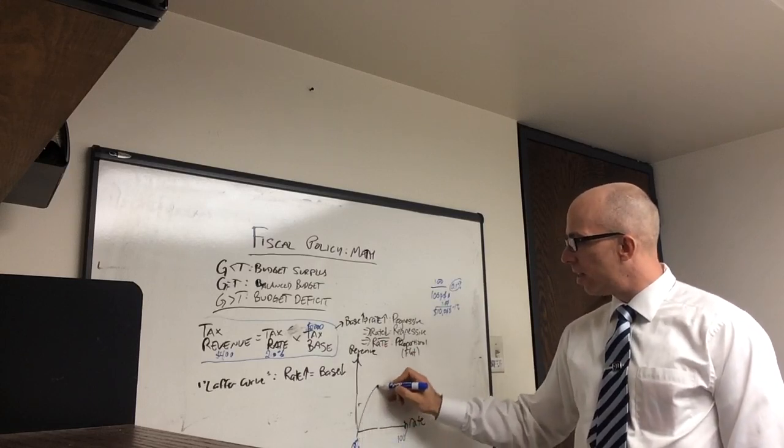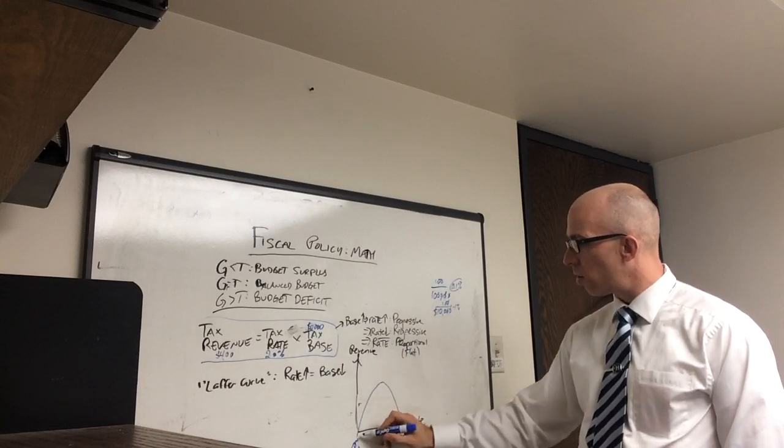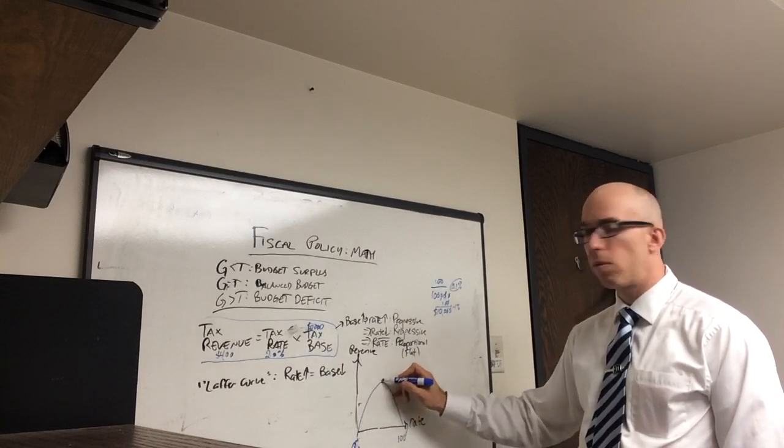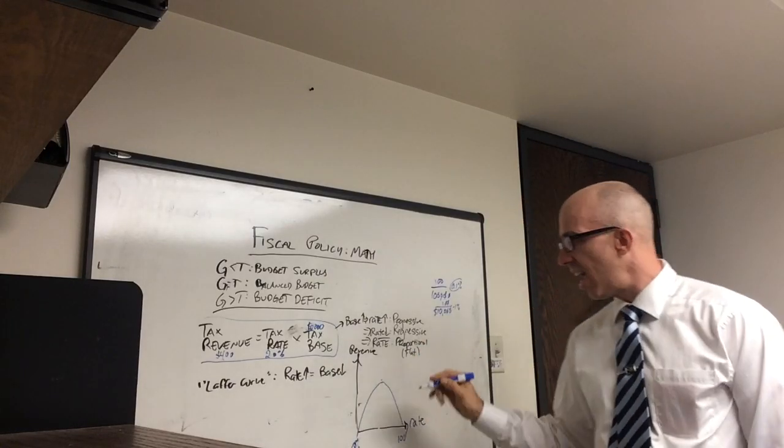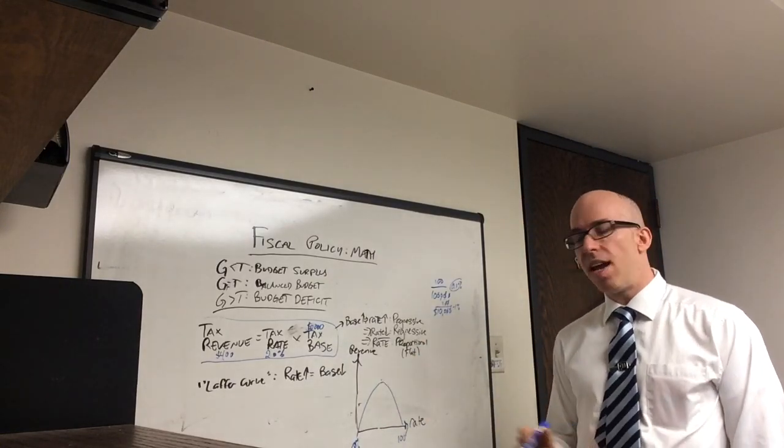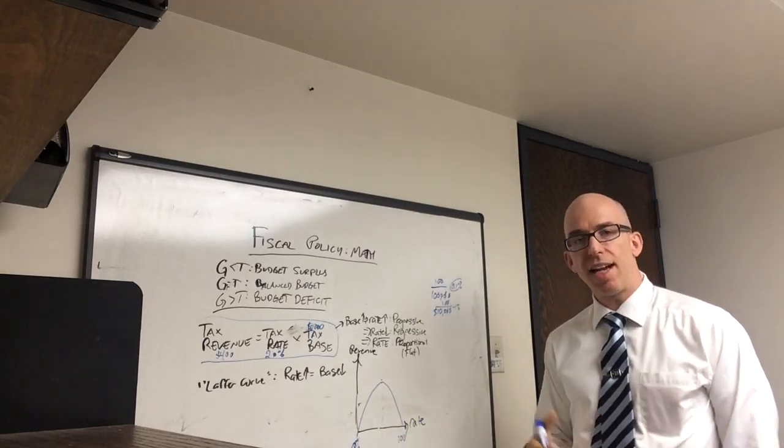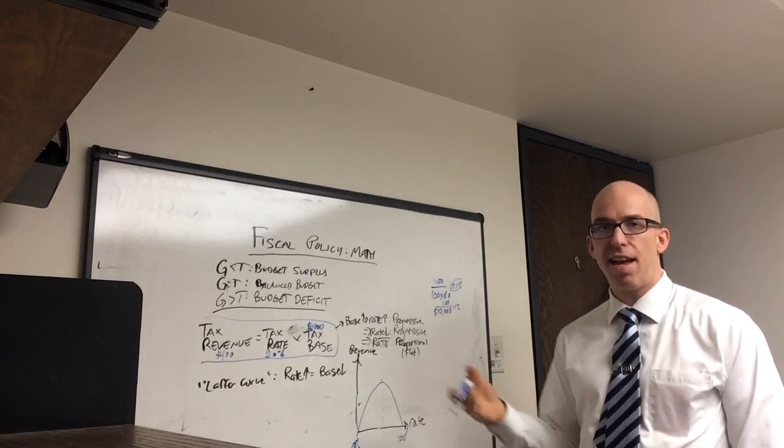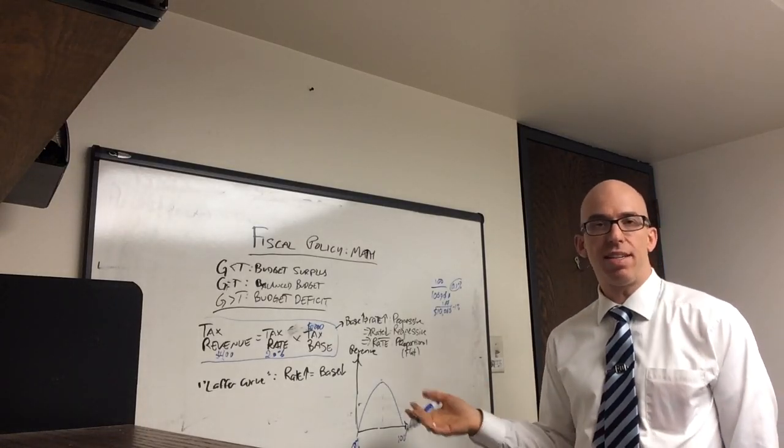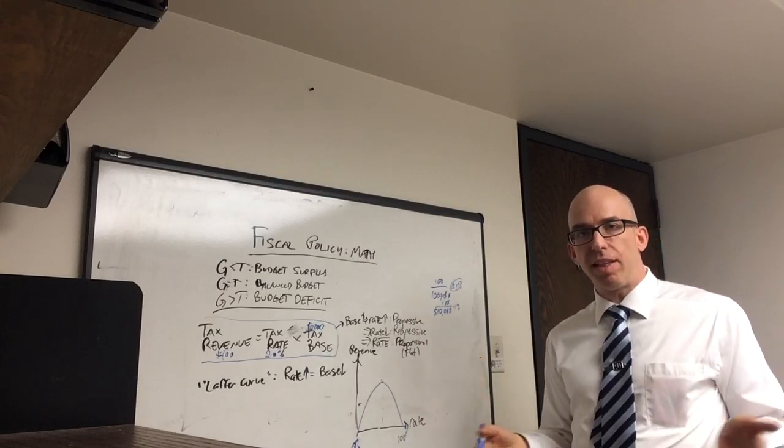But if you raise rates, at some point it turns around. And so raising tax rates will bring in more revenue until you hit some sort of optimal point, some peak. And then it starts to turn around. And so the thing about this is that what percentage does this happen in? Now, in the 1960s, the U.S. government under President Kennedy actually cut the top tax rate from like the 90%. And so that was thought to have been able to stimulate the economy.